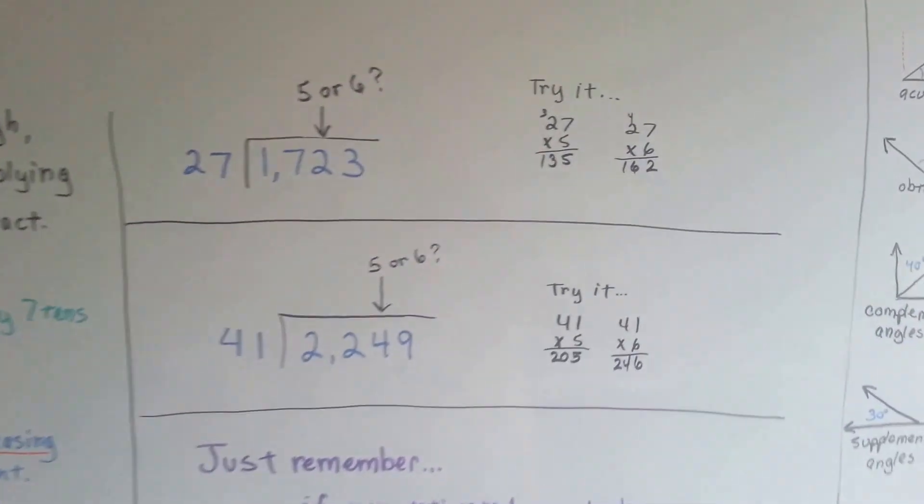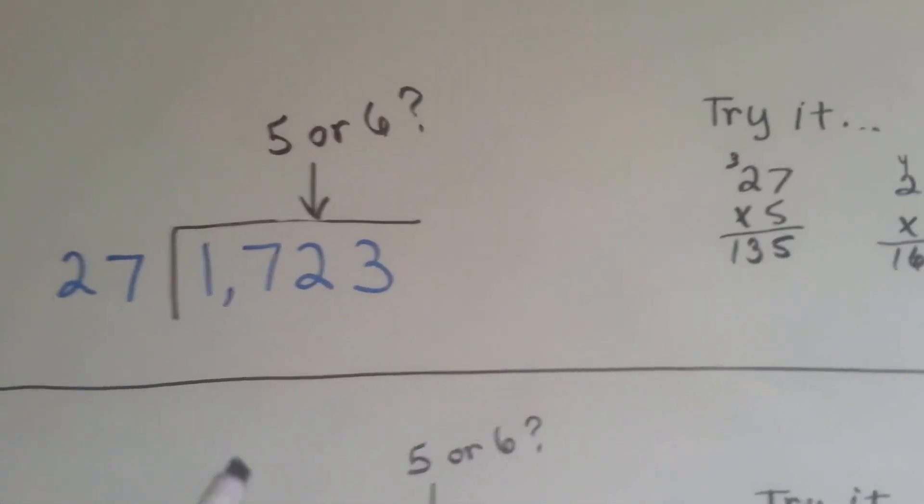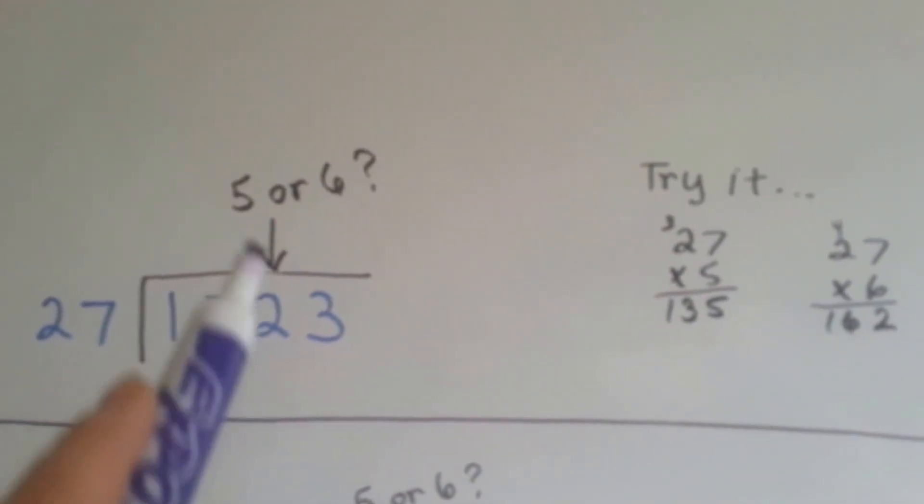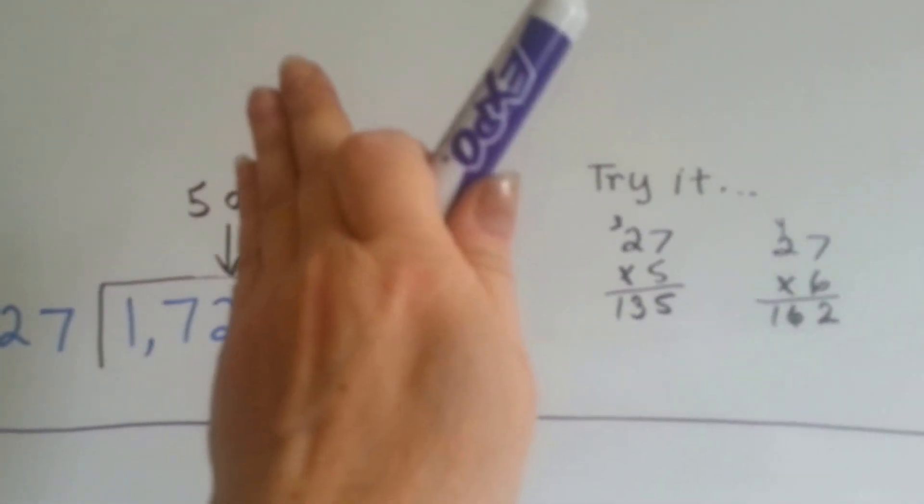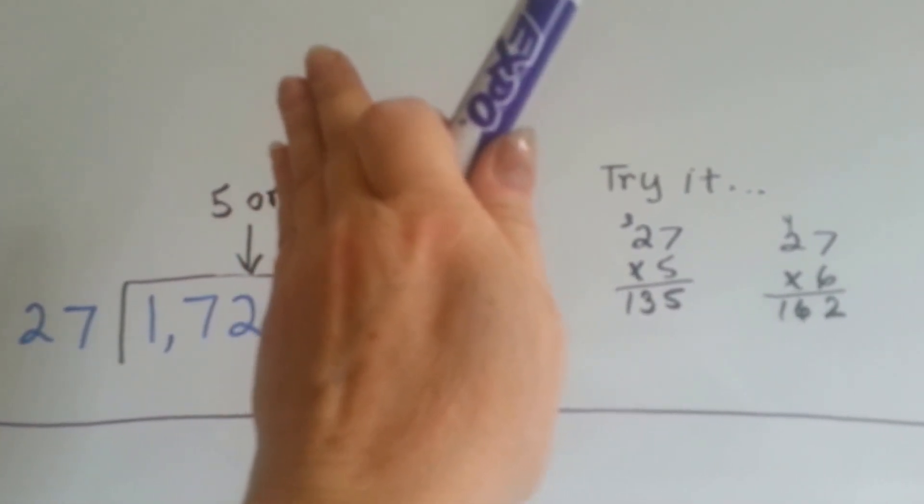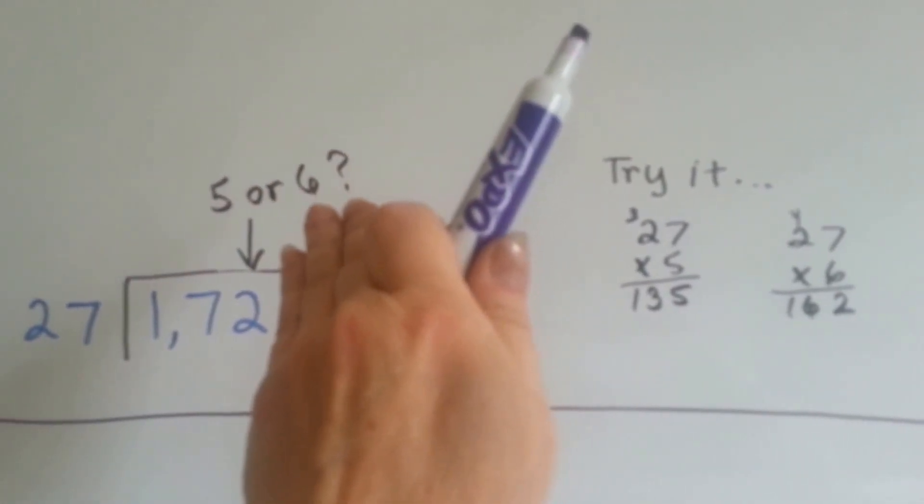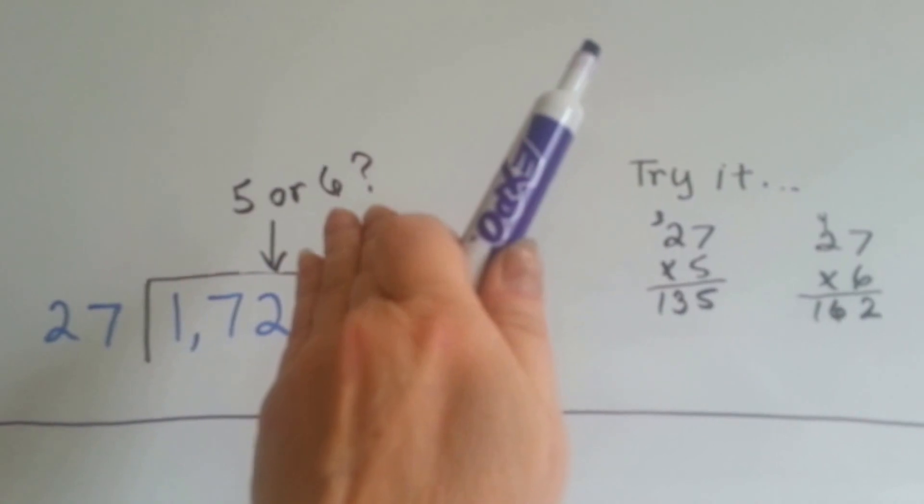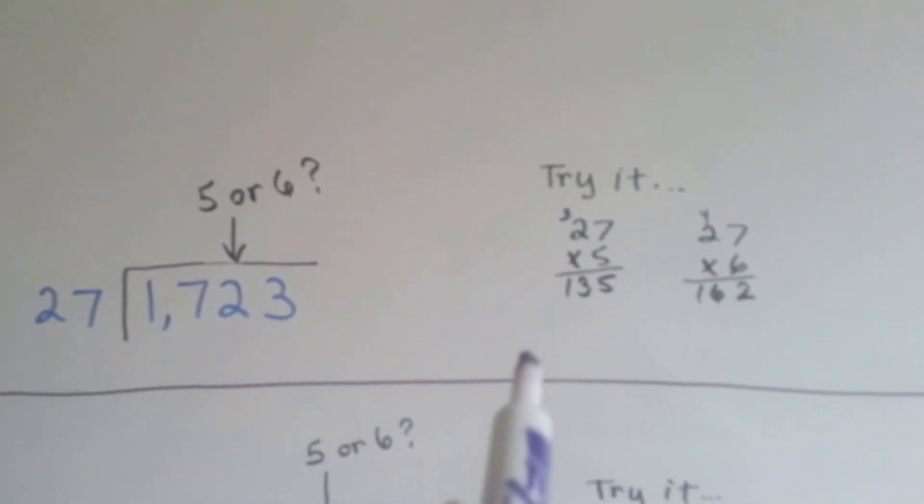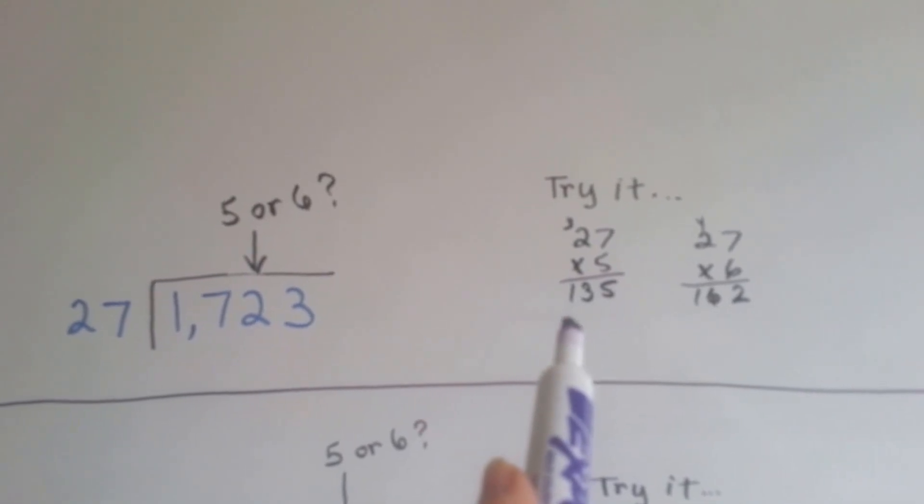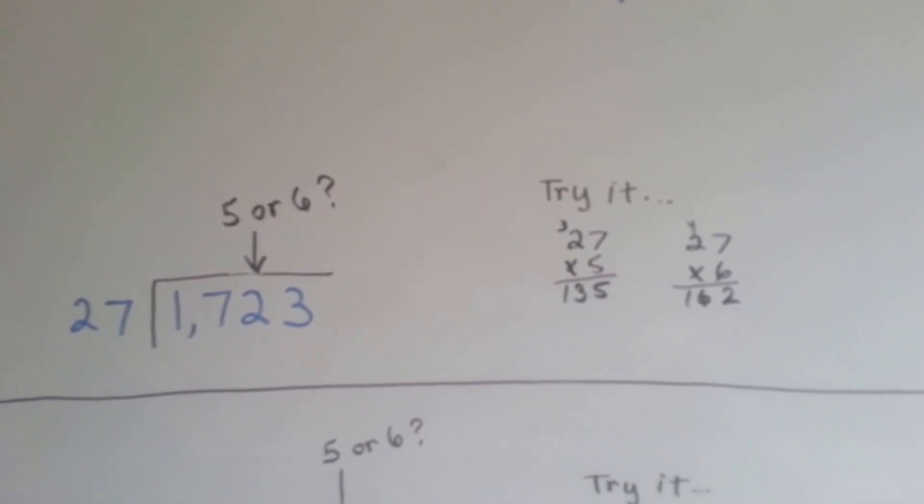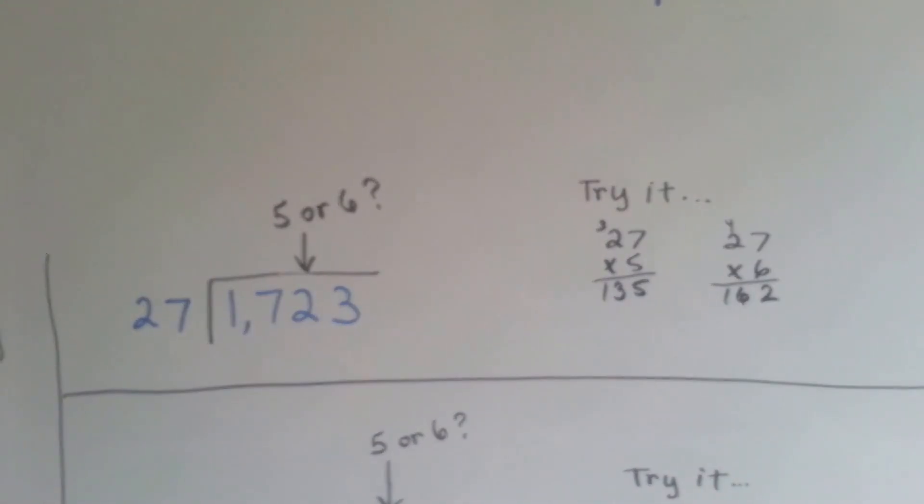Alright, so it'd sort of be like this. If this was our problem, would we put a 5 or a 6 here? We're trying to fit 27, it won't fit into 1, it won't fit into 17, but it'll fit into 172. But how many times? Should we guess 5 or 6? So if we do a little multiplication on the side, guessing the 5, we get 135. So we know that's too small, and the 6 is 162. That would just about do it, wouldn't it? That would be good.